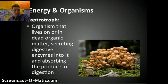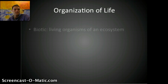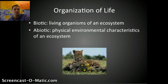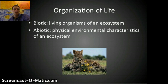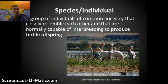Saprotrophs are organisms that live on or in dead organic matter. They secrete digestive enzymes that break down dead things in order to absorb the products of that digestion. Looking at all of this, we can organize life into two categories: biotic, meaning living organisms, and abiotic, which are the physical environmental characteristics. Organisms interact with both biotic and abiotic factors, which helps determine where they live and what their role is in their environment.